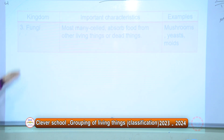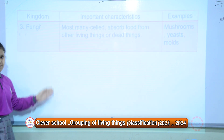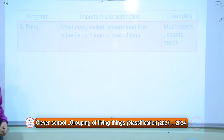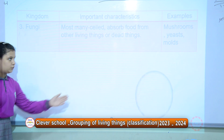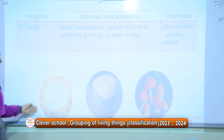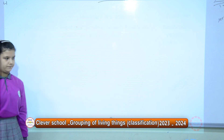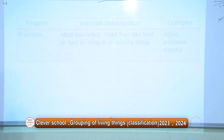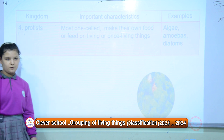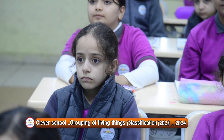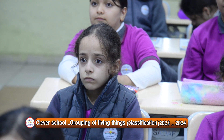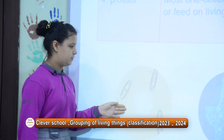Number three, fungi absorb nutrients from living things or dead things. For example, mushroom, yeasts, molds. Number four, protists — they can make their own food or feed on living things or once-living things. For example, algae, amoeba, diatoms.